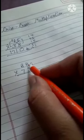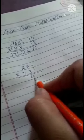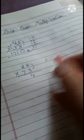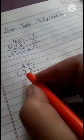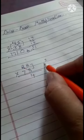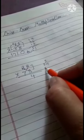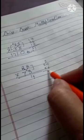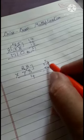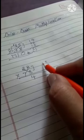3 times 8 is 24. Write 4 here and 2 is carry. After that, cross multiplication: 8 times 3 is 24, 8 times 7 is 56. So add these numbers: 6, 4, 10, 10 plus 2 equals 12, write 2 here.